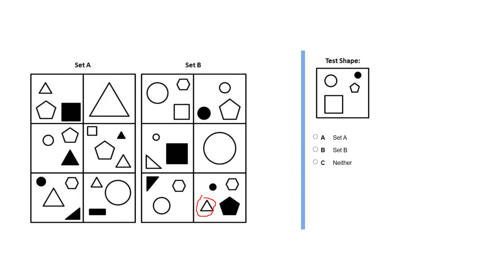Now that we know the rule: if it's got a triangle, it goes in A; if it's got a circle, it goes in B; if it hasn't got either of them, it goes in the neither category, which is C. Once you know that, you can do these questions really quickly. So although you don't have much time for this section, you can afford a minute or more to figure out the rule, and then you can rattle through the test shapes.